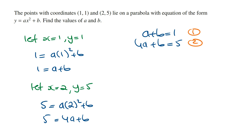From here, using the process of elimination, we can say the second equation minus the first equation. So 4a minus a is going to be 3a, and then b minus b is 0, and then 5 minus 1 is 4. And so solving for a, a is going to be 4/3.